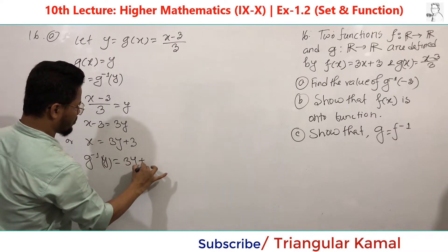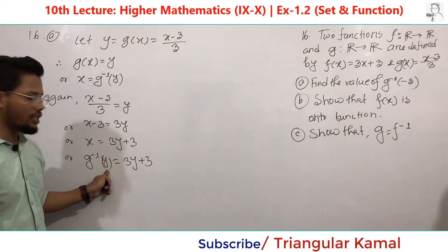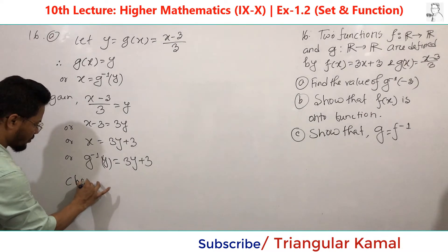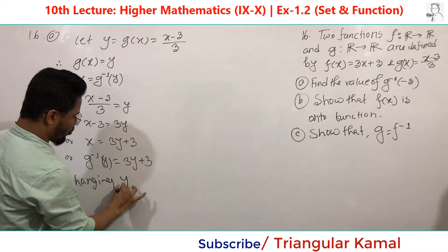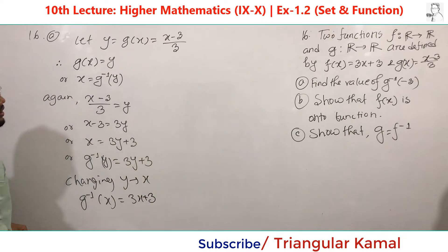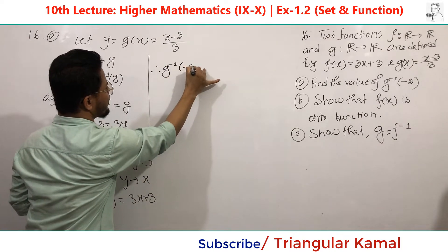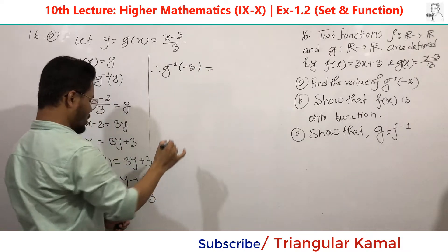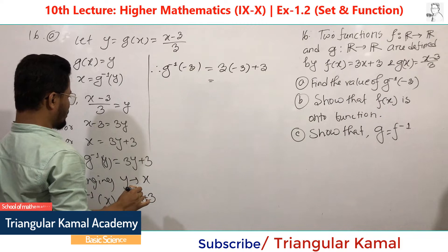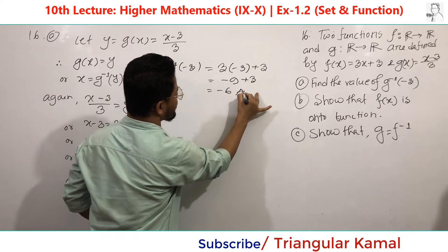Basically this is the equation of the inverse function, but we see here the variable is Y. Now we can apply our requirement — changing Y to X, we get G inverse of X equals 3 times X plus 3. Now find the value of G inverse of minus 3. Applying X equals minus 3, we get 3 times minus 3 plus 3, which is minus 9 plus 3, giving us minus 6, which is our first question answer.